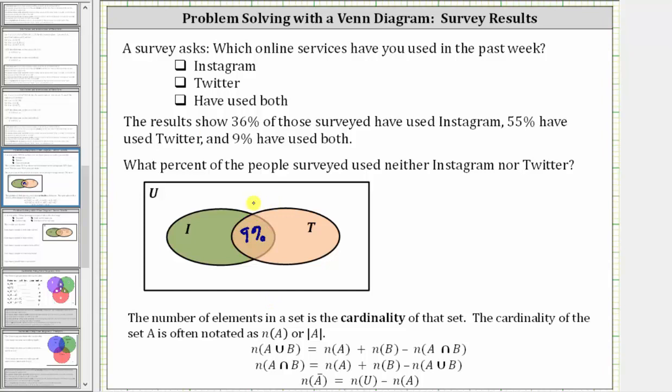We're also told 36% use Instagram, which means set I, this set here, must contain 36%. Notice how this 9% is already in set I, and therefore we can find the percent that only use Instagram by taking 36% and subtracting 9%. So 36% minus 9% is equal to 27%, which means 27% only used Instagram, which is this set here.